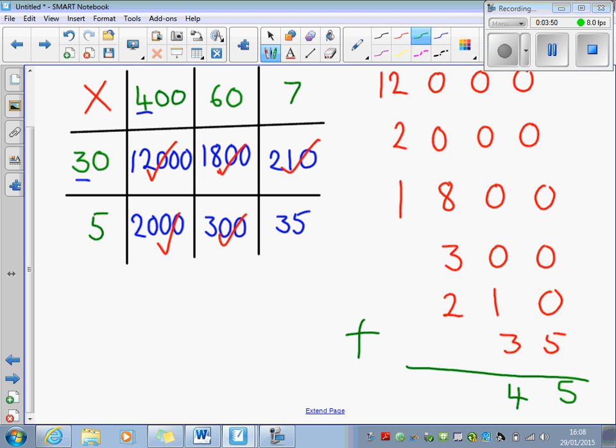And because 8 and 2 make 10, I would put those together and then add the 3 on to make 13. Because I can't fit 13 into one column, I would put the 3 and then carry 1 over into the thousands.